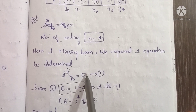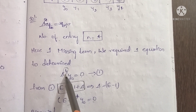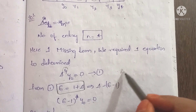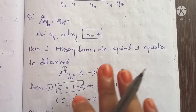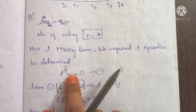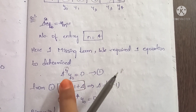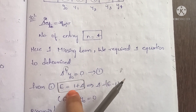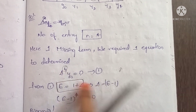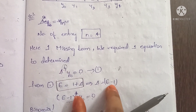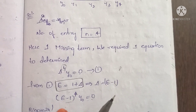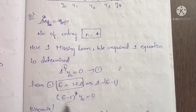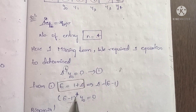With only 1 entry missing, we use delta power 4, y0 equals 0. Expanding using the relation delta equals E minus 1, we get: delta power 4, y0 equals (E minus 1) to the power 4, y0 equals 0. This is the format.